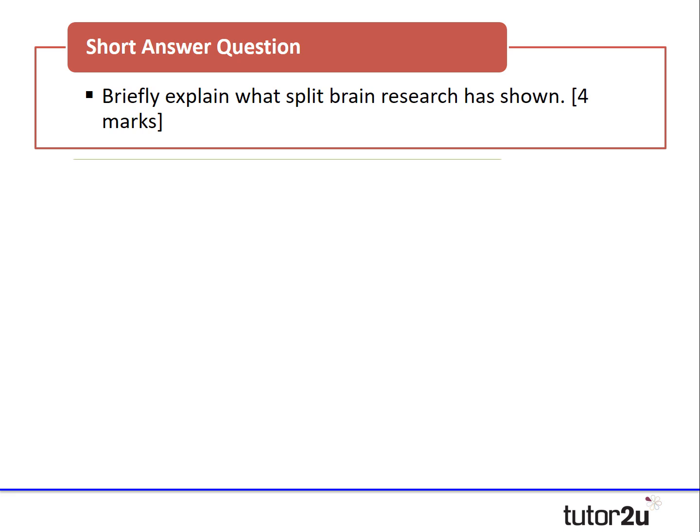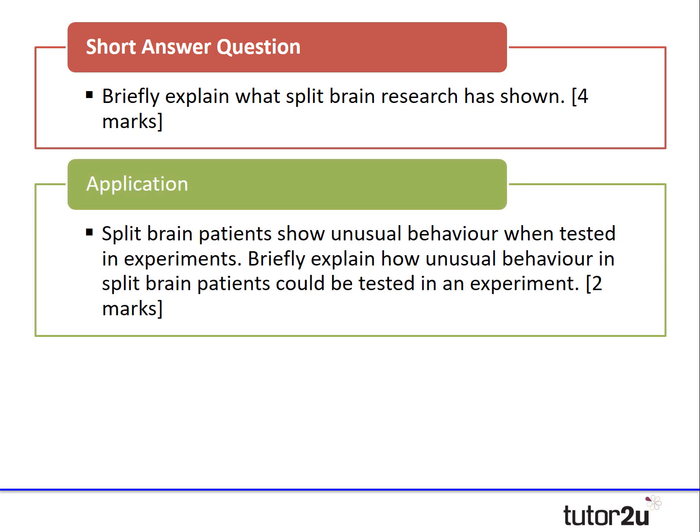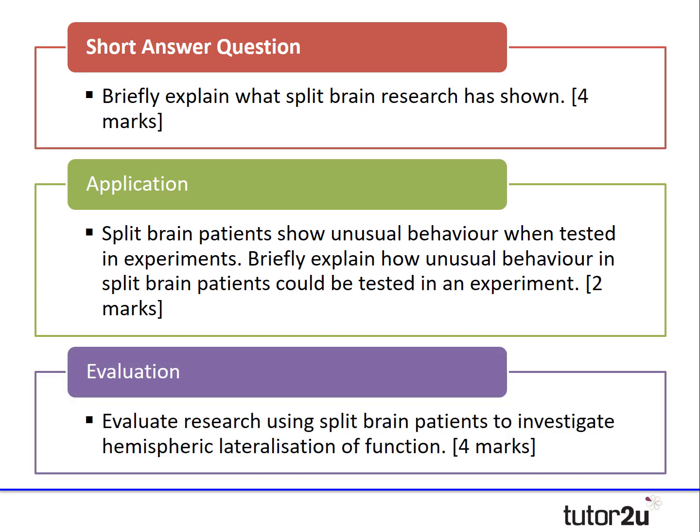The three questions we're going to focus on are: the short answer question — briefly explain what split-brain research has shown, for four marks; the application question — briefly explain how the unusual behaviour in split-brain patients could be tested, for two marks; and the evaluation question — evaluate research using split-brain patients to investigate hemispheric lateralisation of function, for four marks.